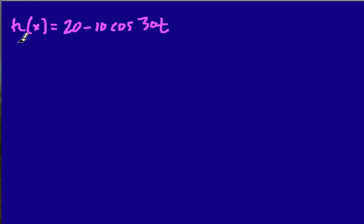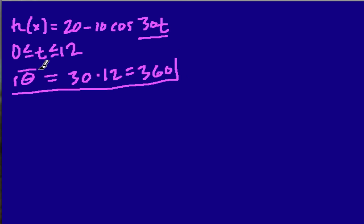And to do that, we're going to use the interval from 0 for t up until 12 seconds. And that's nice because theta is going to then equal at our max value 30 times 12, which is 360. So we're going to do one full rotation.